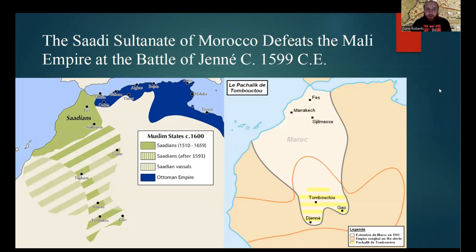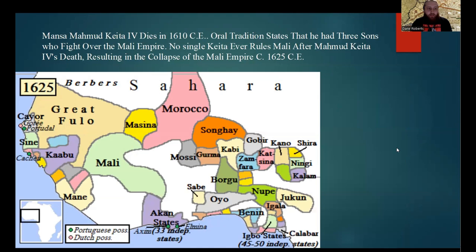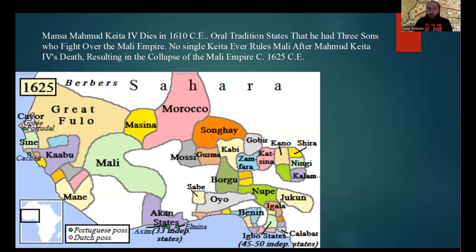All of this together eventually led the Mali Empire to be too weak to fight back against foreign invasion. Specifically in 1599 CE, the Saadi Sultanate of Morocco invaded deep into West African territory and defeated the Mali Empire at the Battle of Jene. Despite this defeat, the Mali Empire lived on for about another decade. However, the last Mansa of the Mali Empire, Mansa Mahmud Keita the Fourth, would die, and while oral tradition states he had three sons who could succeed him, they fought over the Mali Empire, leading to no single Keita ruling over it again. All of this together resulted in the collapse of the Mali Empire by 1625 CE.